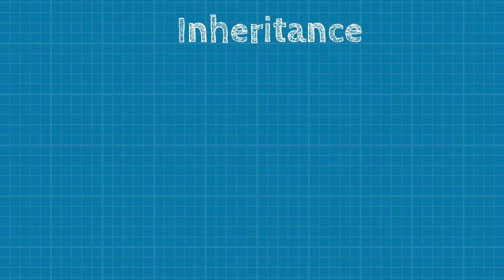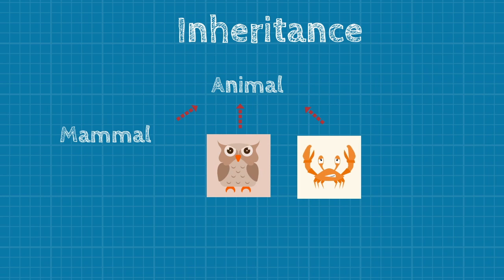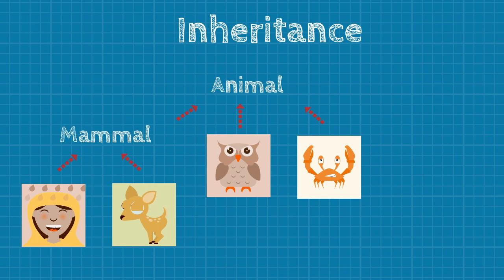In object-oriented programming, inheritance allows new classes to take on properties of existing classes. A class that inherits from another class is called a subclass, and the class that others inherit from is called a superclass. The relationships of classes through inheritance give rise to hierarchy, allowing classes to share common traits and behaviors. For instance, we can define the class animal that has very generic traits like number of legs, number of eyes, tail or no tail, and some generic behaviors like eating or moving. Then we can have more specific classes that inherit from animal, such as mammal, bird, and arthropod. They share the same instance variables, but may have more attributes specific to their classes. The class mammal can then have more subclasses like human or deer. Human and deer may share similar traits, but the class human can define methods that deer doesn't have, like speaking.